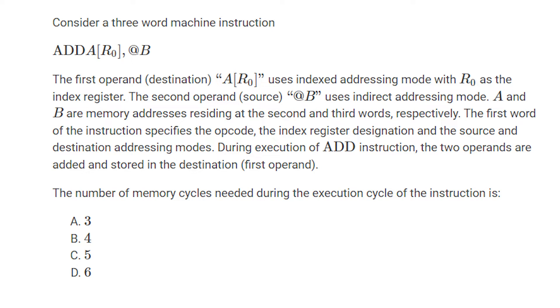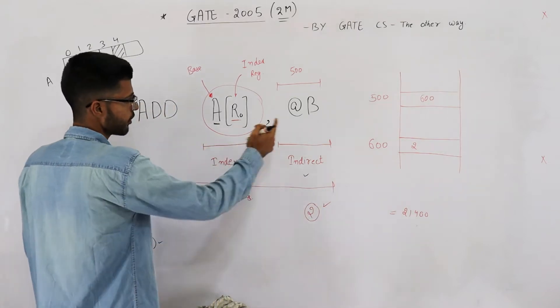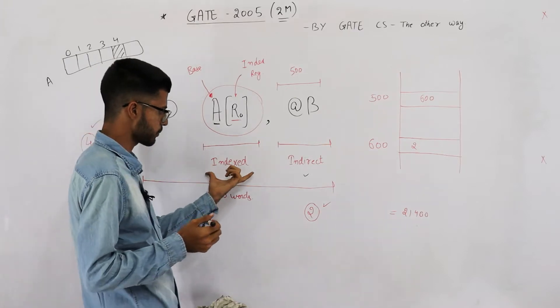Consider a three word machine instruction ADD A[R0], @B. The first operand, which is destination, uses indexed addressing mode with R0 as index register. The second operand, which is source, uses indirect addressing mode. A and B are memory addresses residing in second and third words respectively. So we are given this is a three word instruction ADD A[R0], @B and the first operand uses indexed addressing mode.